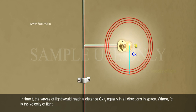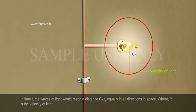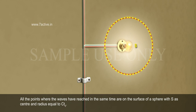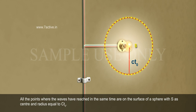where c is the velocity of light. All the points where the waves have reached in the same time are on the surface of a sphere, with S as center and radius equal to ct.